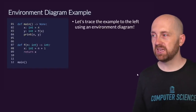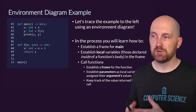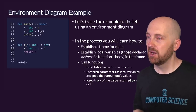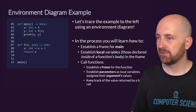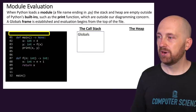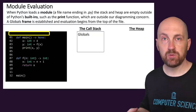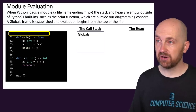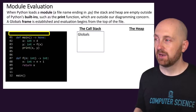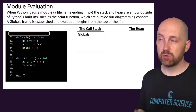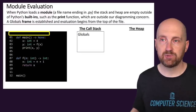We're going to trace through this example using an environment diagram step by step. We'll learn how to establish a frame for main, establish some local variables, and learn how to call a function. For these slides, I'm using a white background so that if you want to practice on your own, you can print off this example slide and start tracing on paper. Otherwise, I would encourage following along with pencil and paper and actually writing out each step.